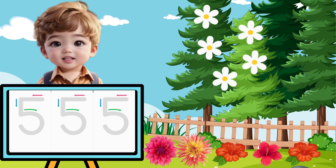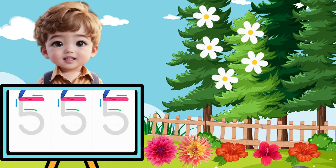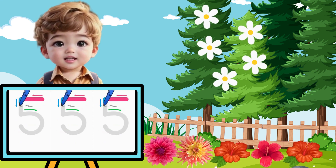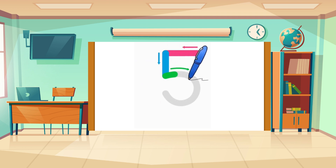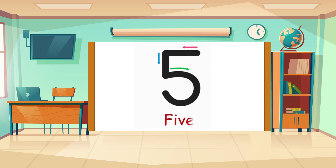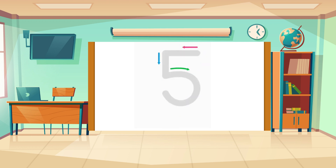Now I'm going to show you how to trace number five. When we get to this point, we start tracing down. And now we draw a big curve, finishing right here. That's it, friends. Easy peasy, right? Try it at home using some paper and a pencil. It's really easy.